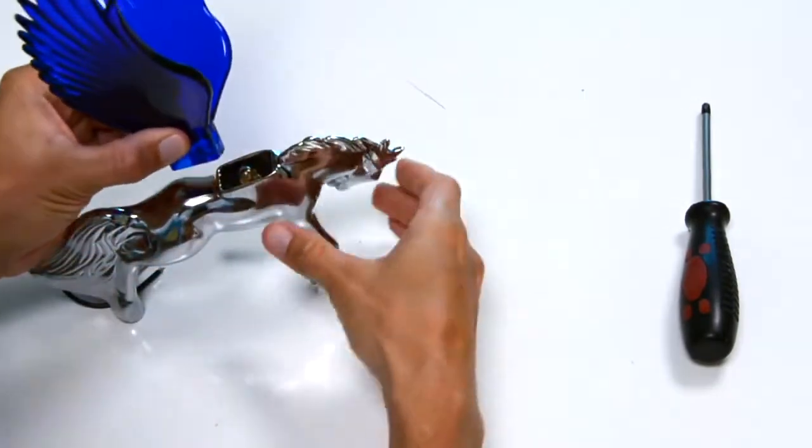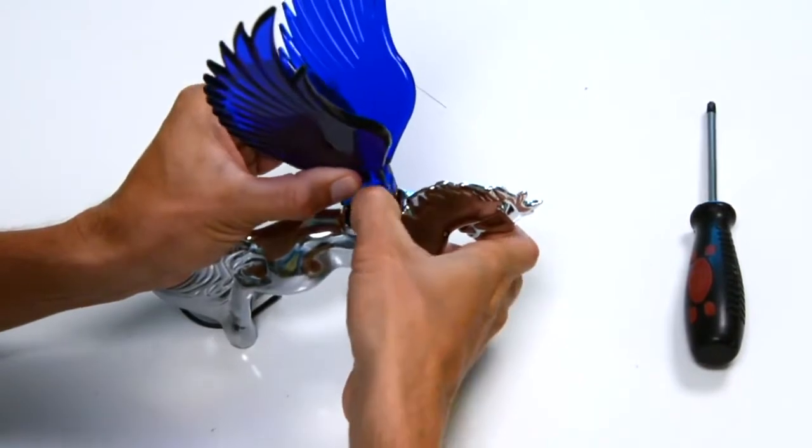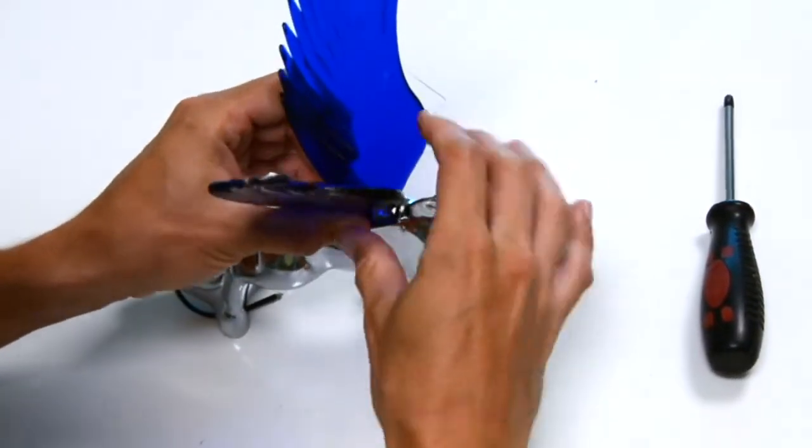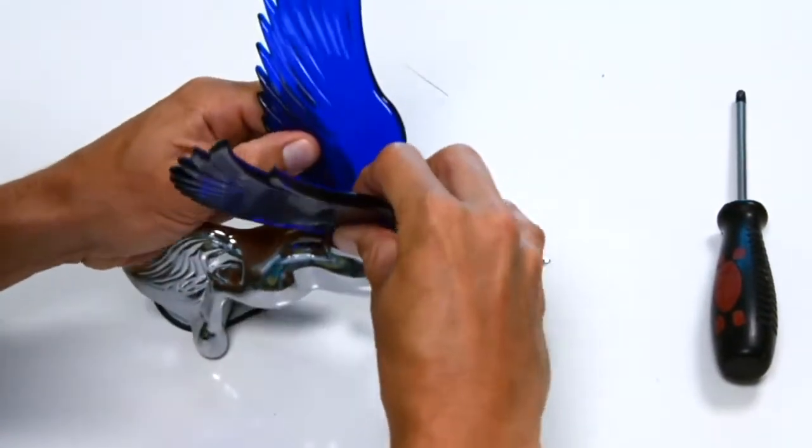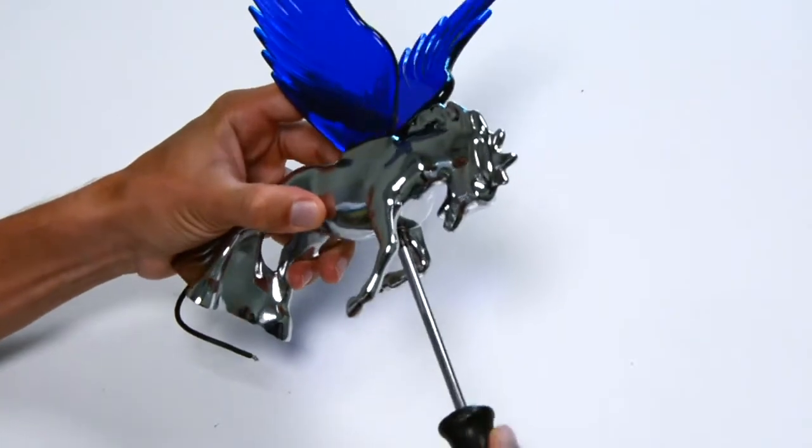Carefully slide wings over light bulb and insert into body of ornament until wings reach the bottom. Keep applying a slight pressure to the top of the wings while you locate the screw. Then tighten with the screwdriver.